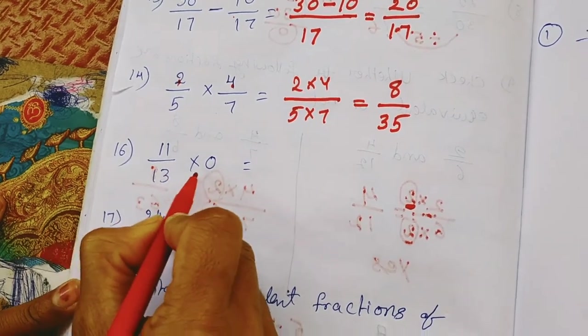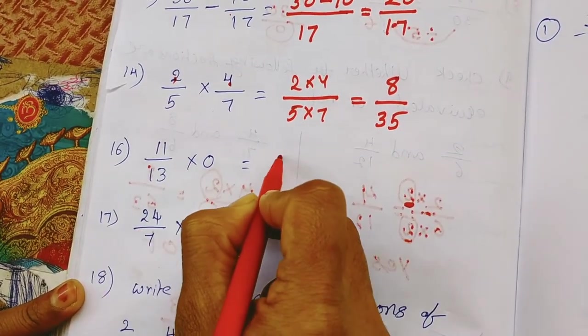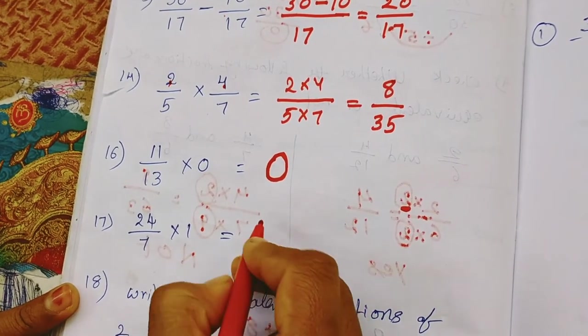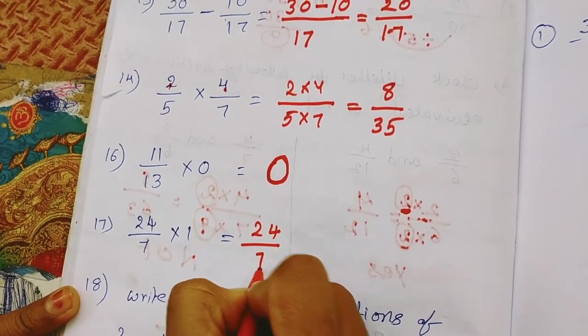Next, here fraction, any fraction into 0 gives 0. Any fraction into 1 gives that fraction itself.